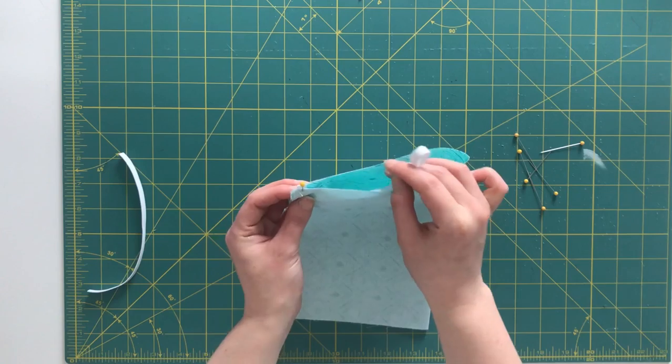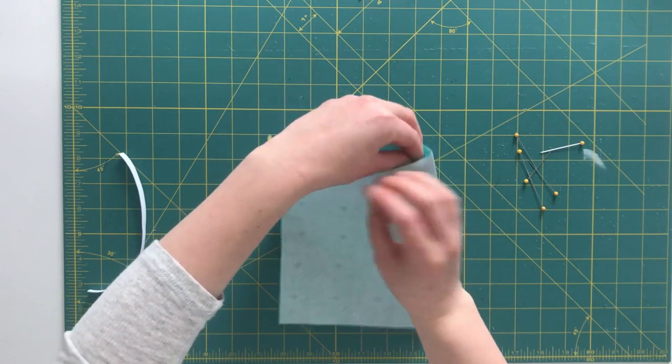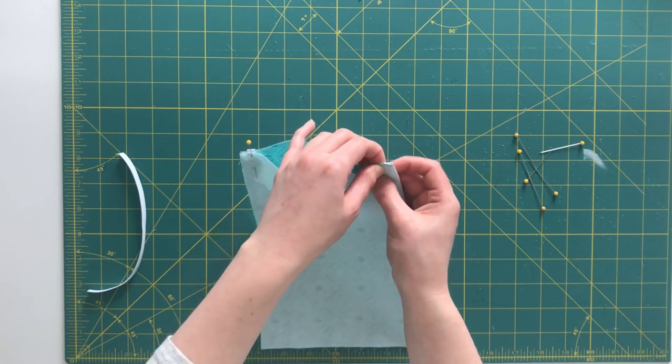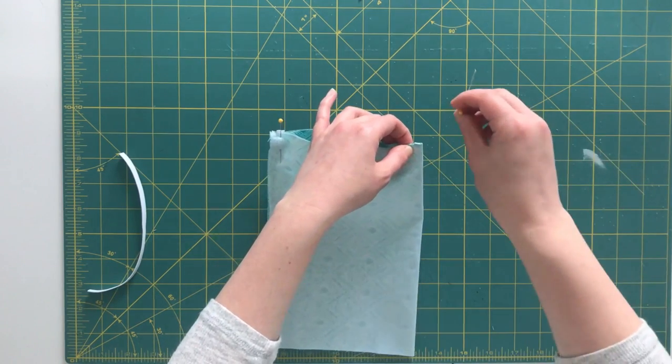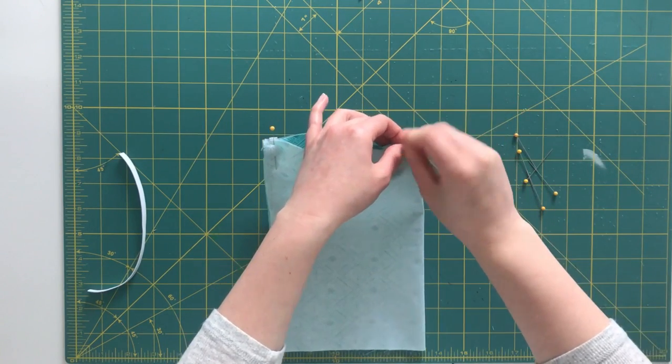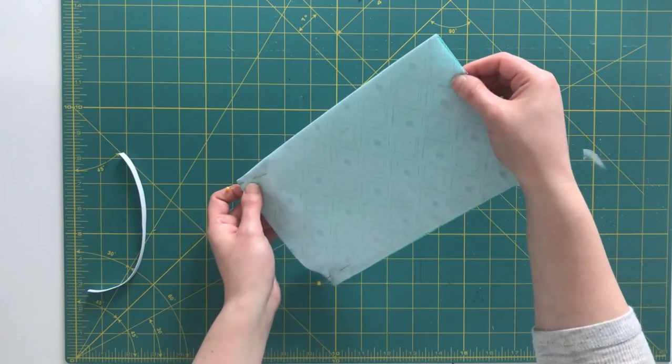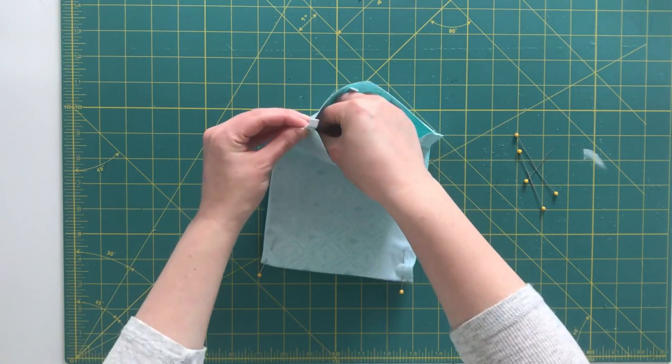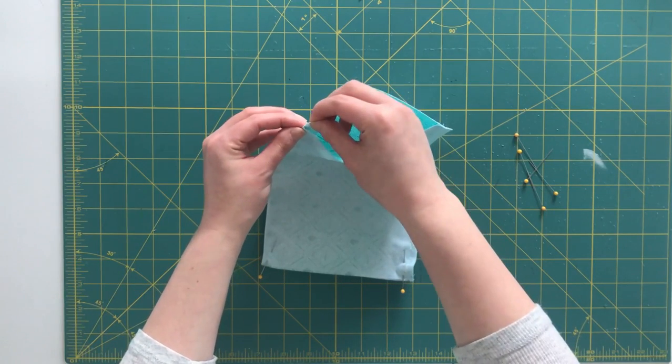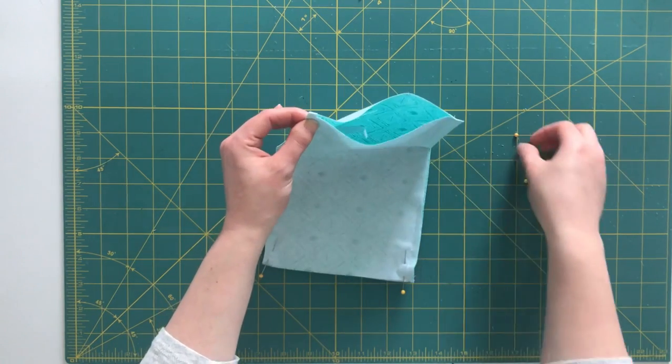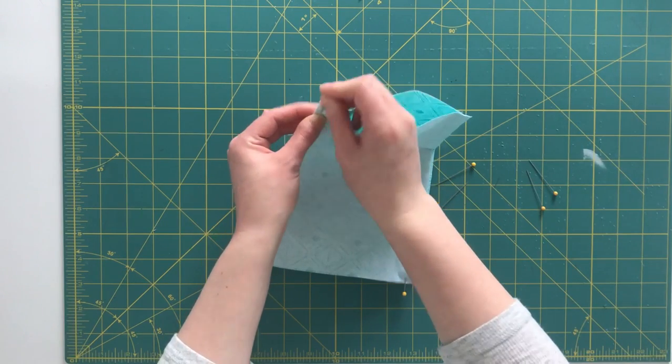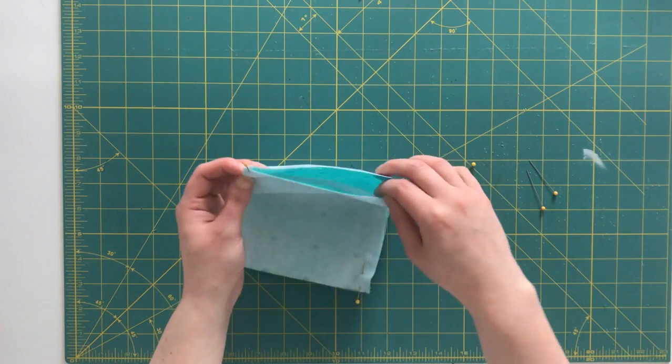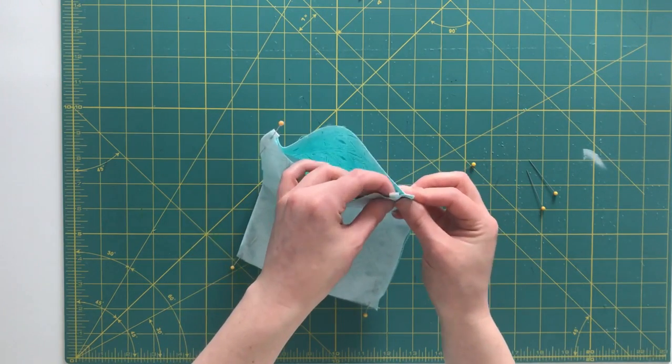And then make sure your elastic isn't twisted and repeat in this top corner and then on the other side.